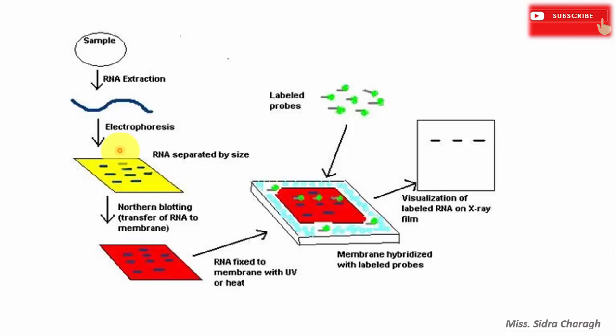Large RNA molecules are separated by electrophoresis on a formaldehyde agarose gel, which prevents normal base pairing and maintains RNA in a denatured state. Small RNA molecules are separated on a denaturing polyacrylamide gel electrophoresis.